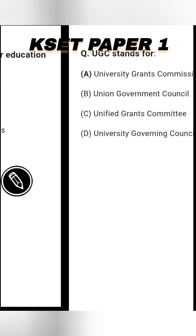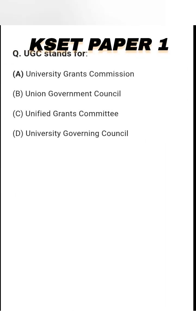Next question: UGC stands for — option A: University Grant Commission, option B: Union Government Council, option C: Unicor Grant Committee, option D: University Governing Council. This is also important from an examination point of view. The right answer is option A — University Grant Commission.